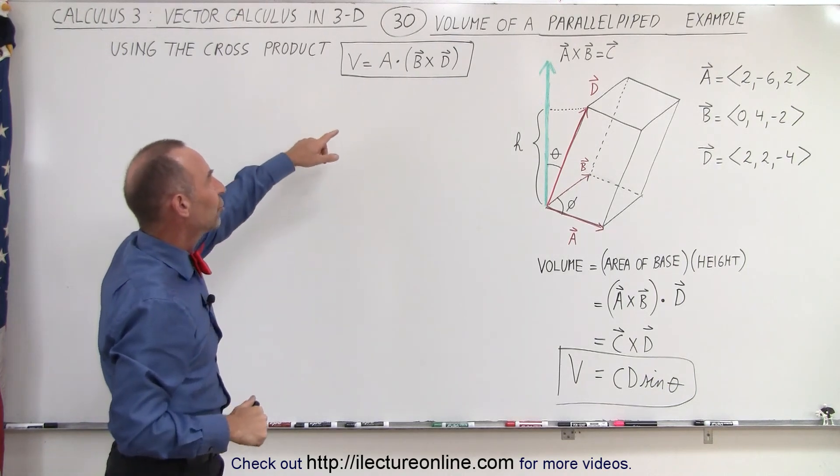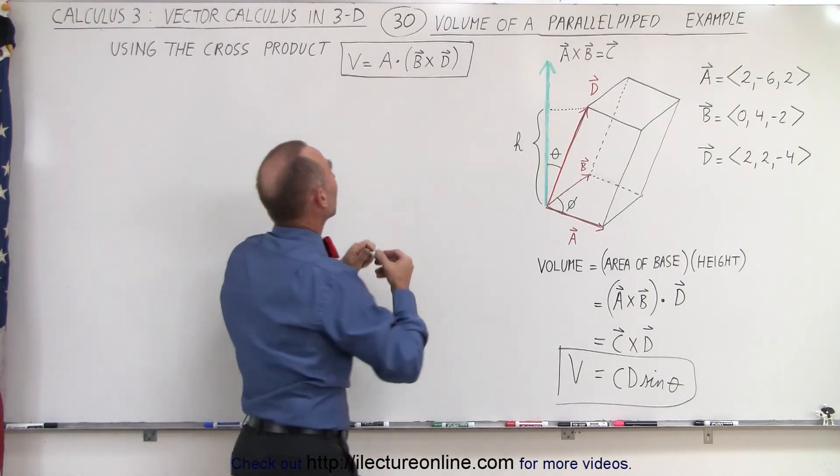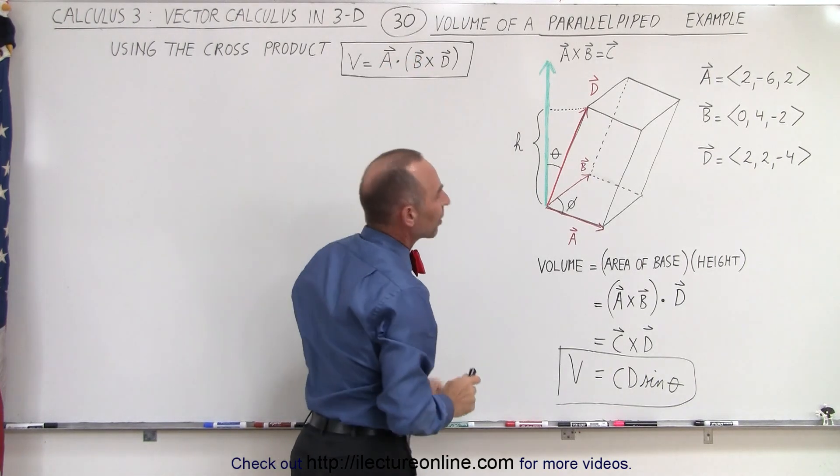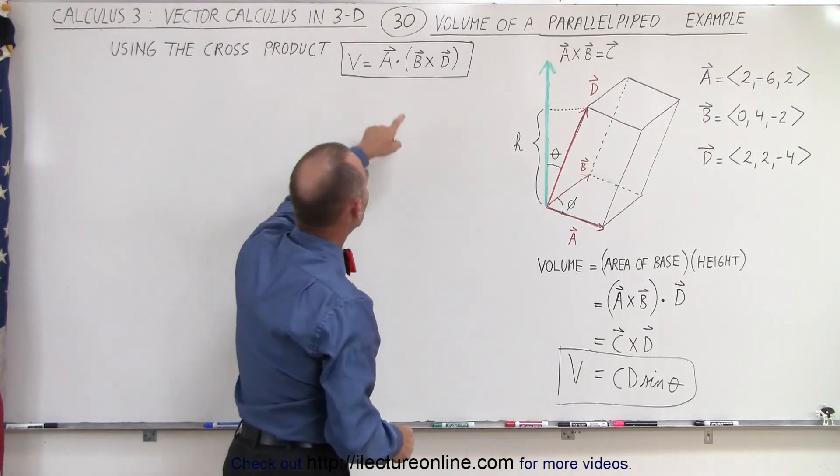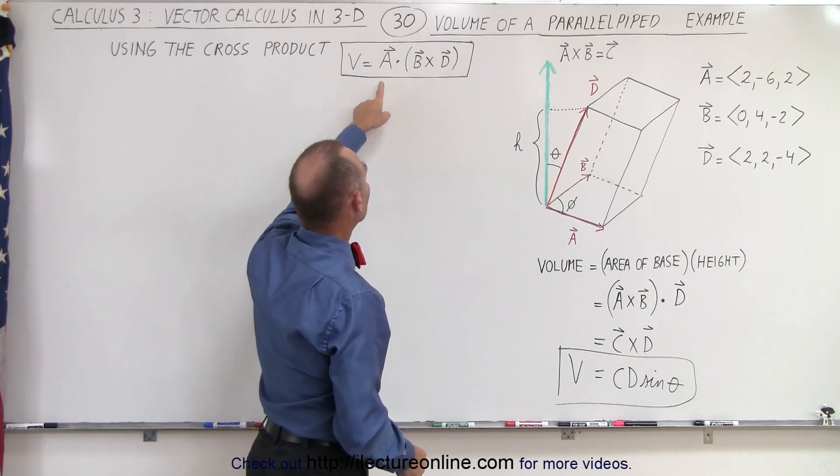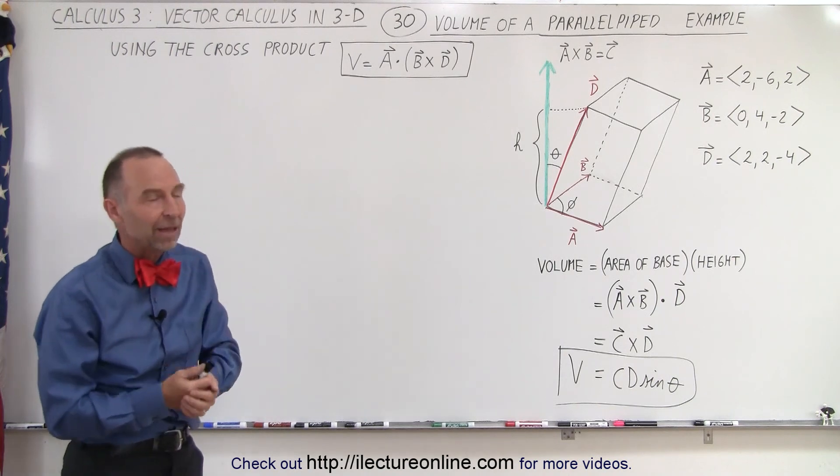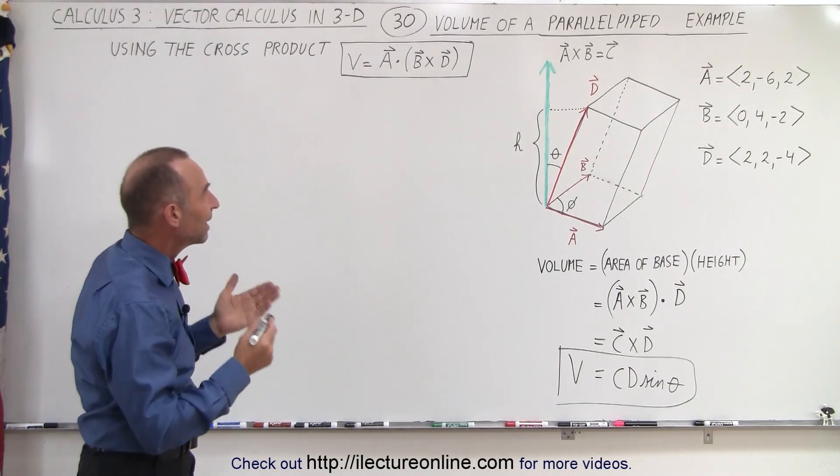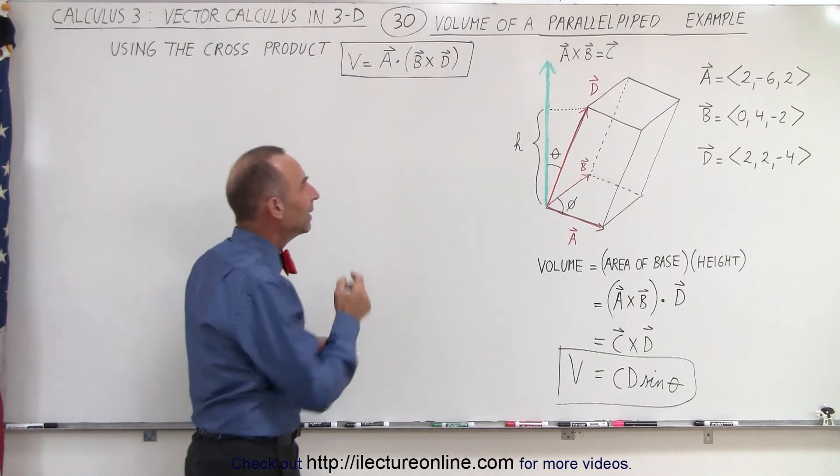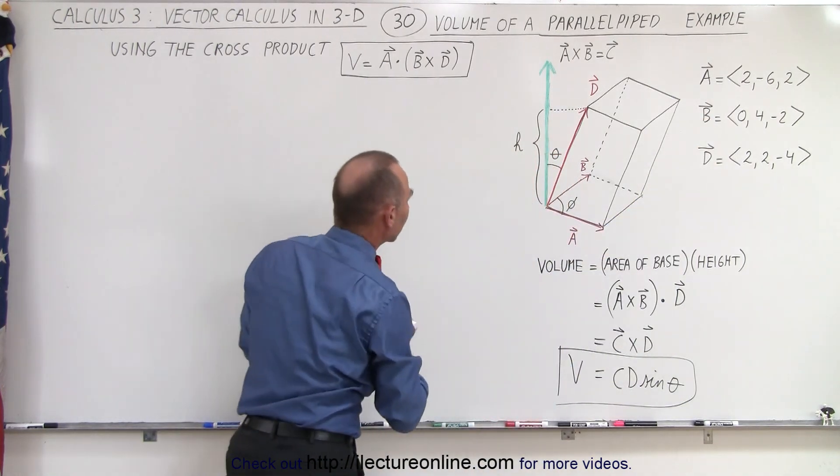So what we're going to do is show you that it works. We're going to find the volume by taking the dot product of A dot the cross product of B and D. It could have been the cross product of A and B and then dot it with D, or it could have been the cross product of A and D and then dot it with B. It doesn't really matter which way you do it, you will always get the same answer. Of course, don't forget that we're going to need to take the absolute value of that in case we get a negative quantity.